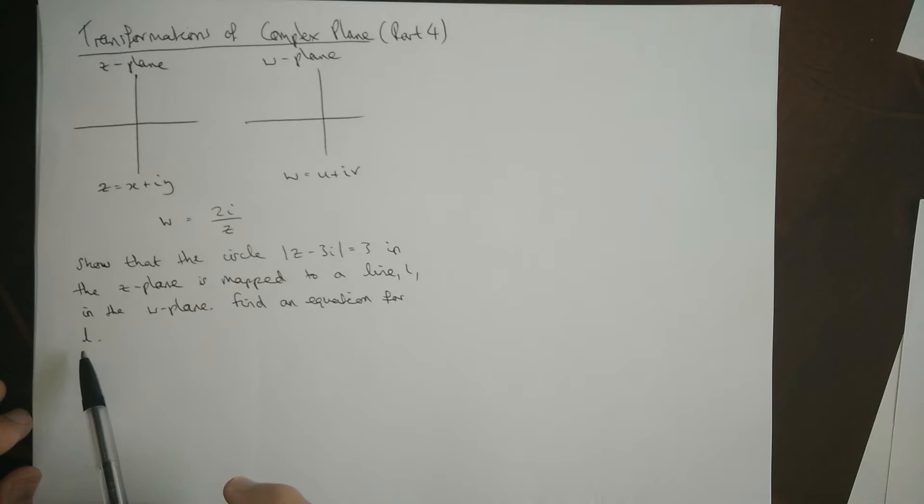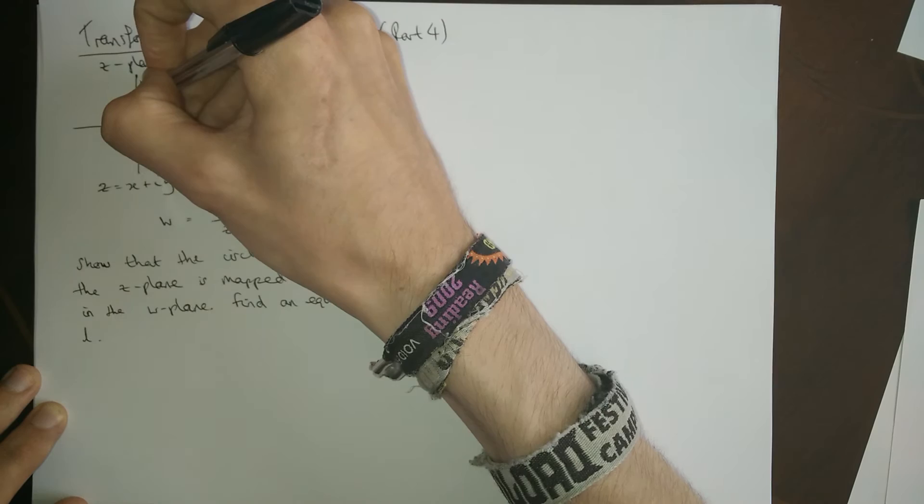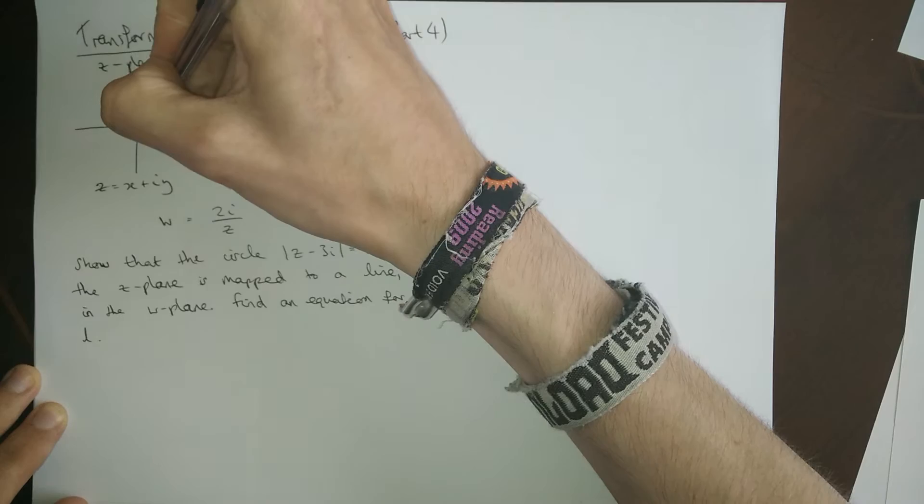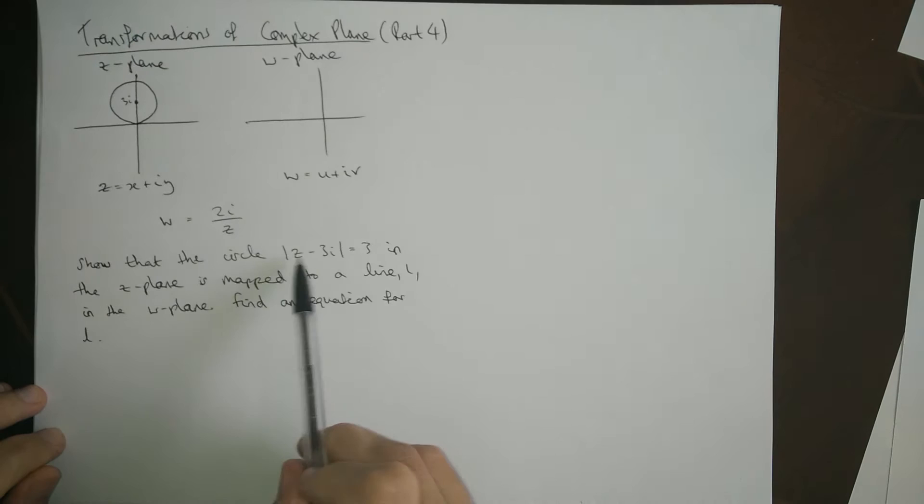So, this circle, if you just draw it on here, is based at 3i, right? And it has a radius of 3. So, it's this kind of circle like this. And that's going to be mapped over here to a line somewhere. The difference this time is the information isn't like the imaginary axis or real axis or X equals Y or anything like that. It's very much complex numbery. And that just changes slightly how we approach the question.